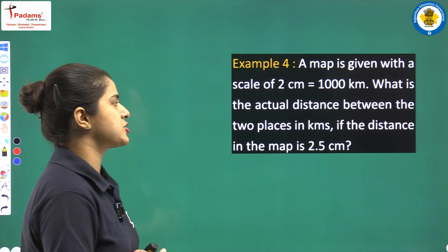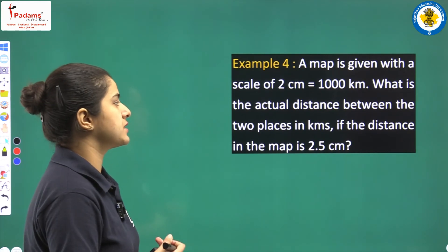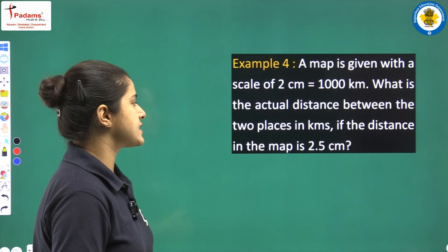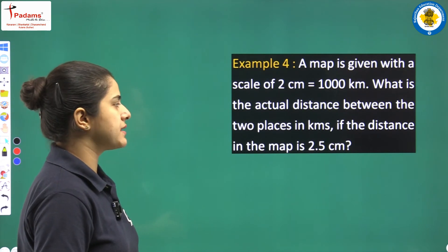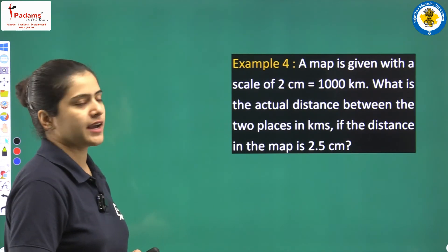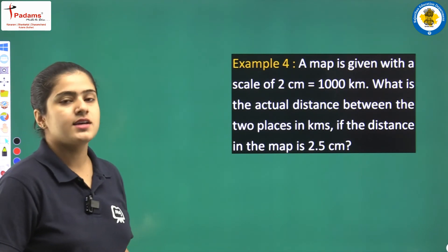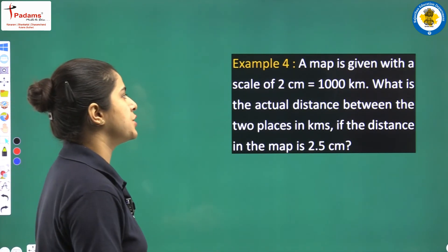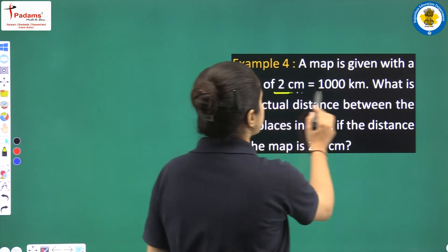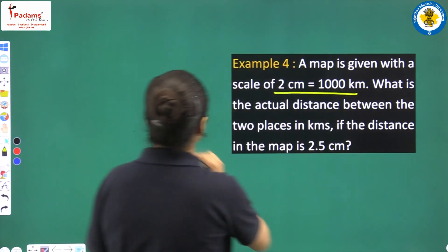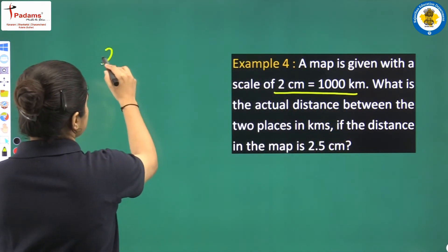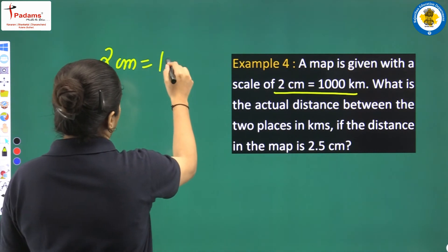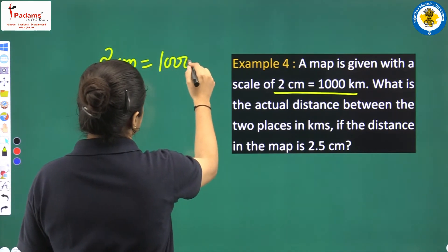If the distance on the map is 2.5 cm, and the scale is 2 cm equals 1,000 km, what is the actual distance?